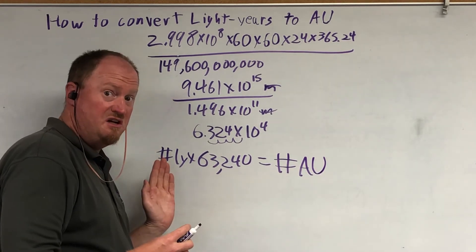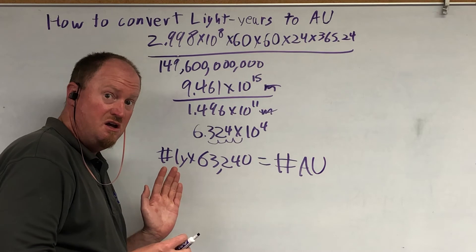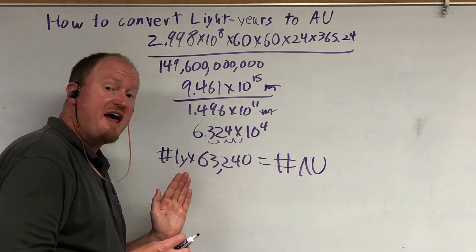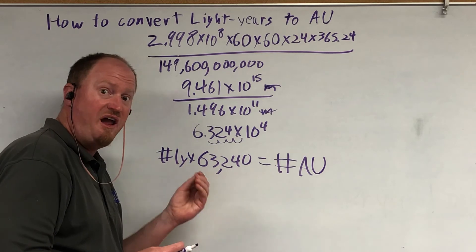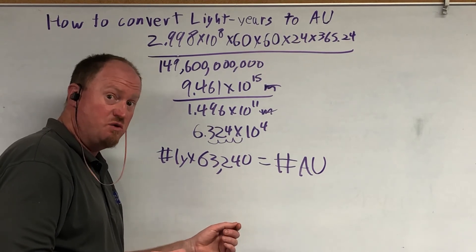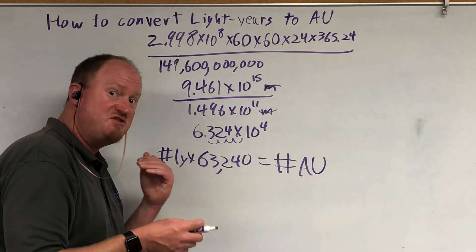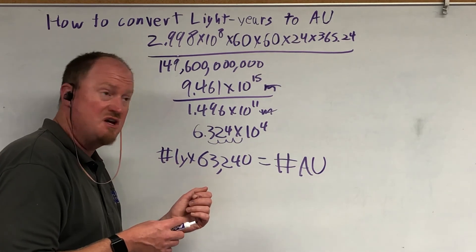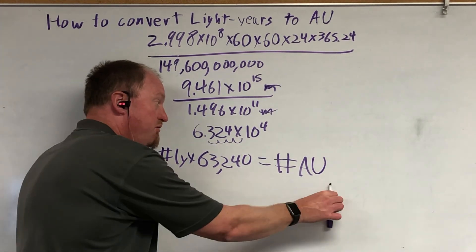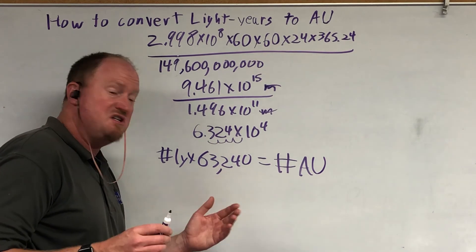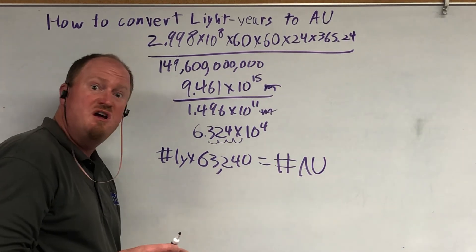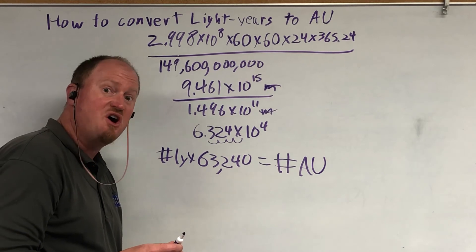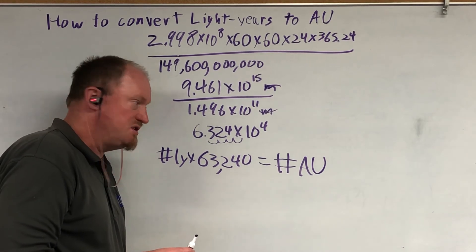They're hugely different units. It is almost exactly the same conversion rate as between an inch and a mile in the system that the U.S. still uses. So vastly different. That's why we use them for vastly different things. AUs we use for measuring distances within our own solar system. Light years we use for measuring distances between stars.